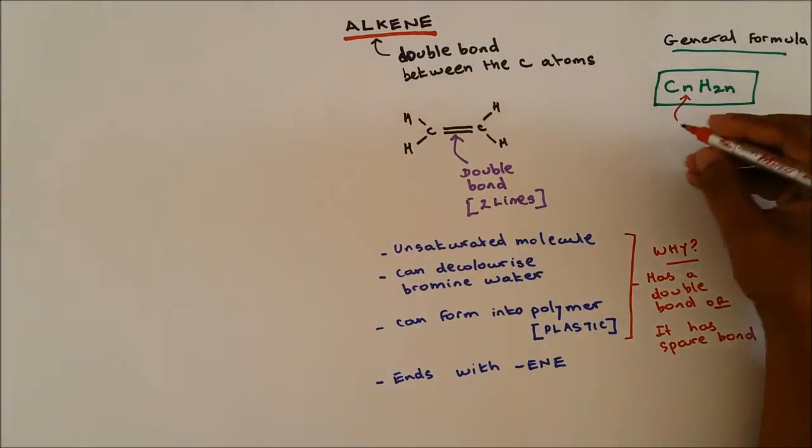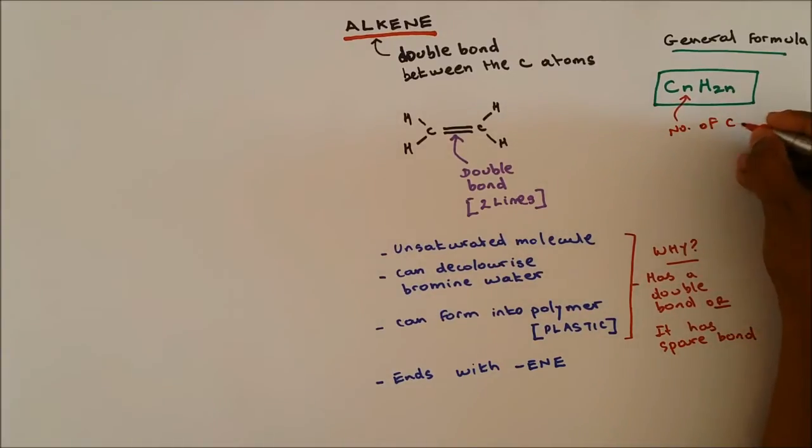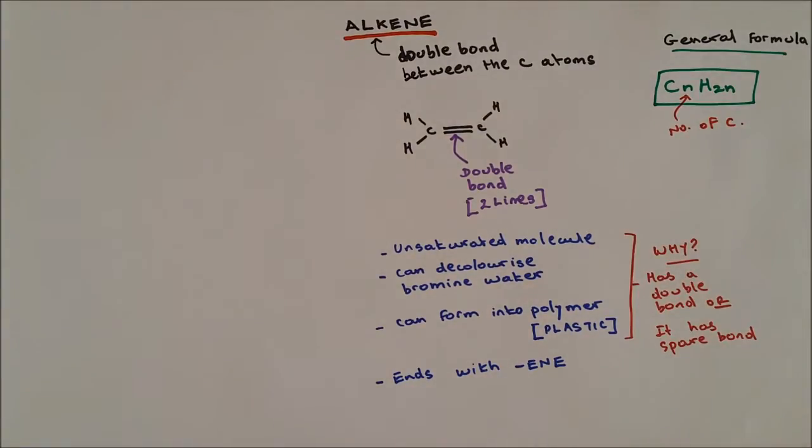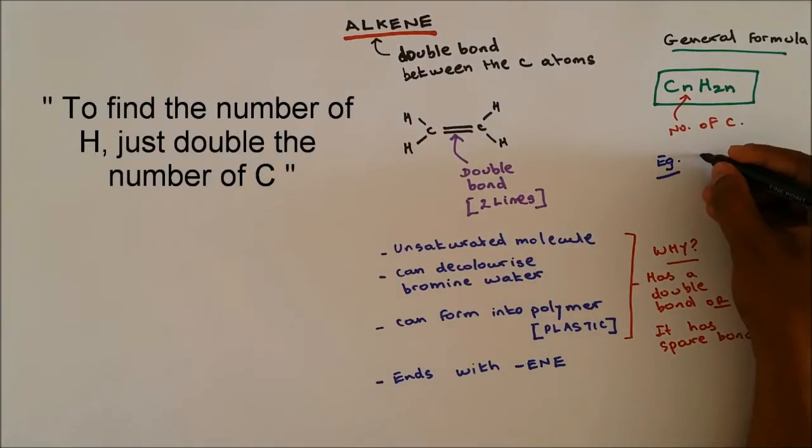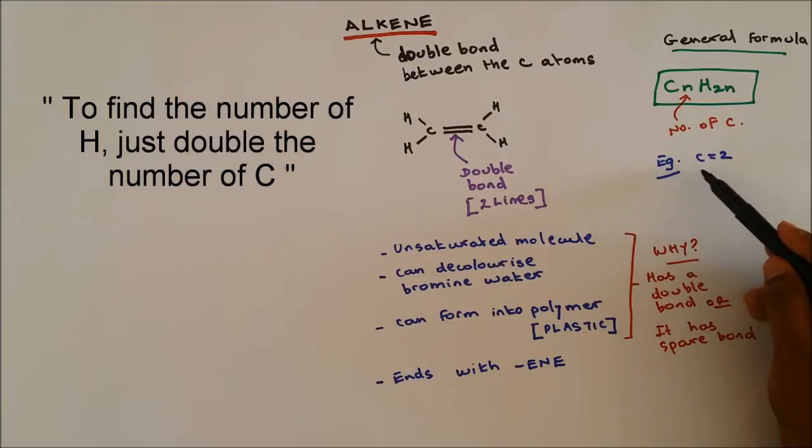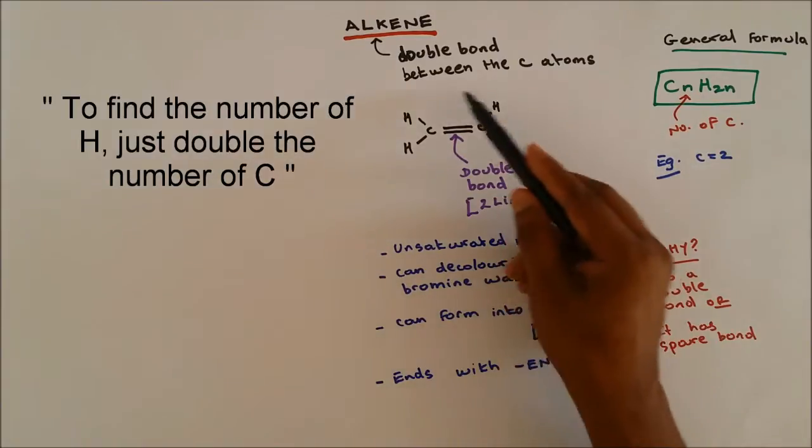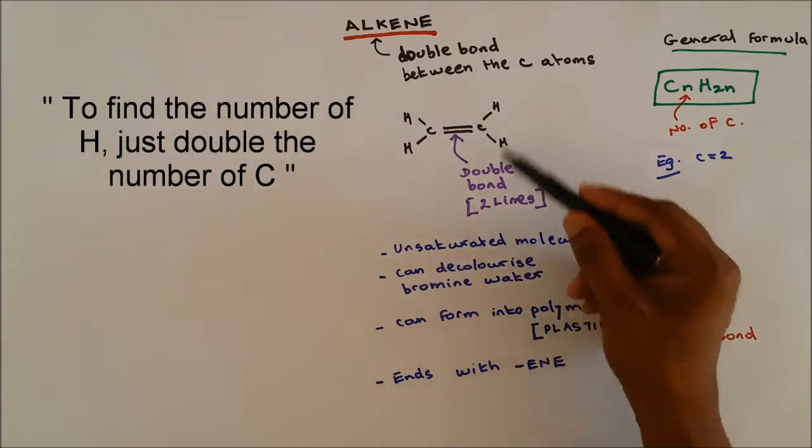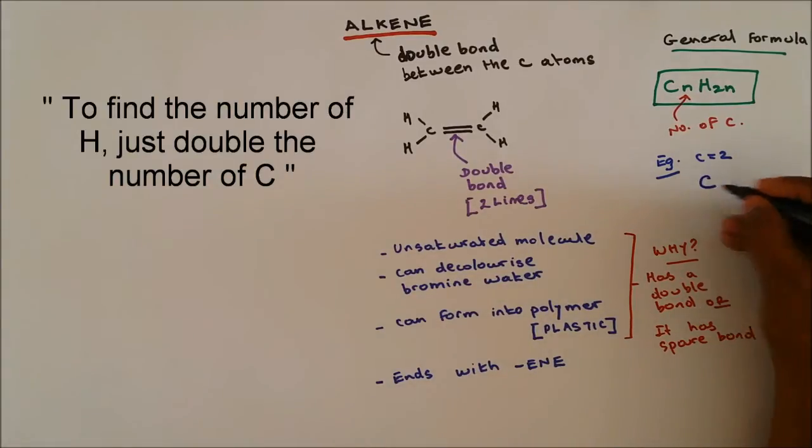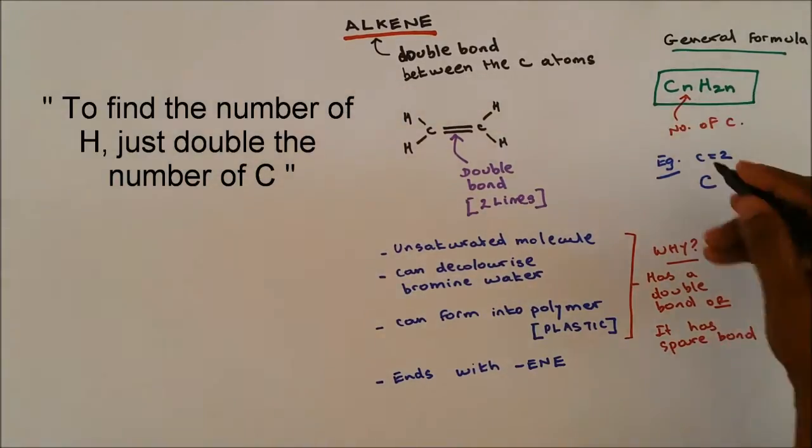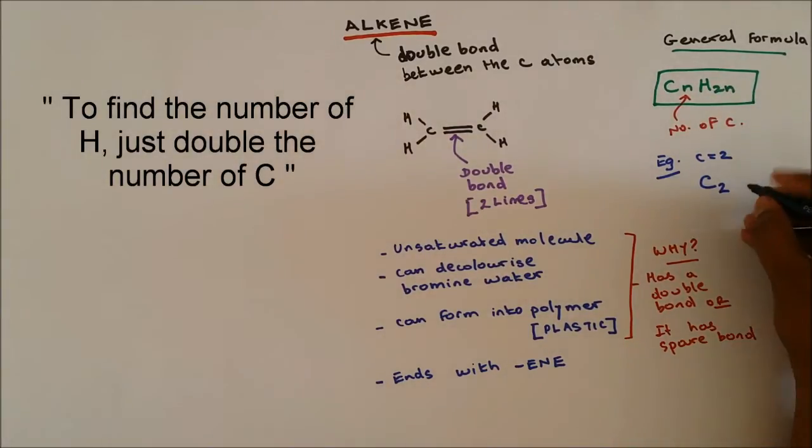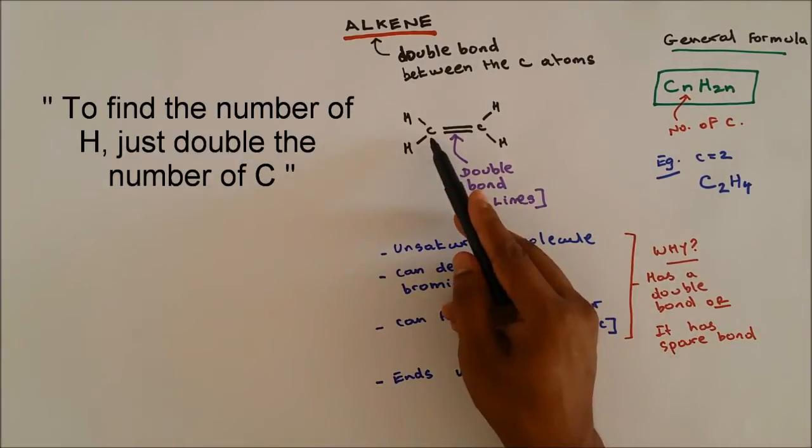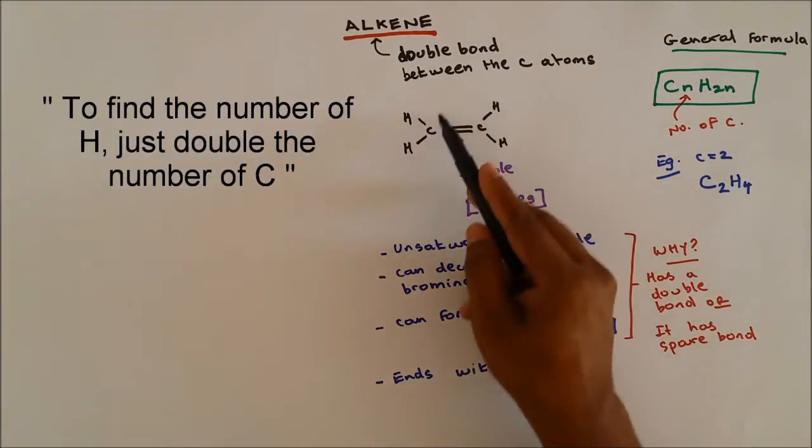The n in front of the carbon represents the number of carbon. So let's do an example. If C is equal to 2, we would expect hydrogen to be 4. So this is 2, we're replacing the n by 2, and 2 times 2 is 4. So C2H4. We can see that if the carbon is 2, we will have 4 hydrogen.